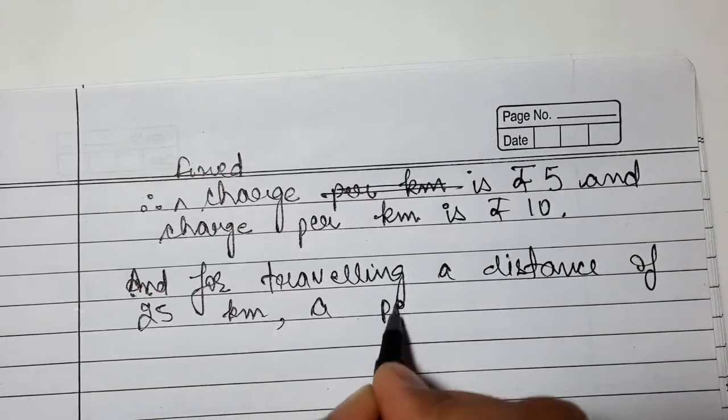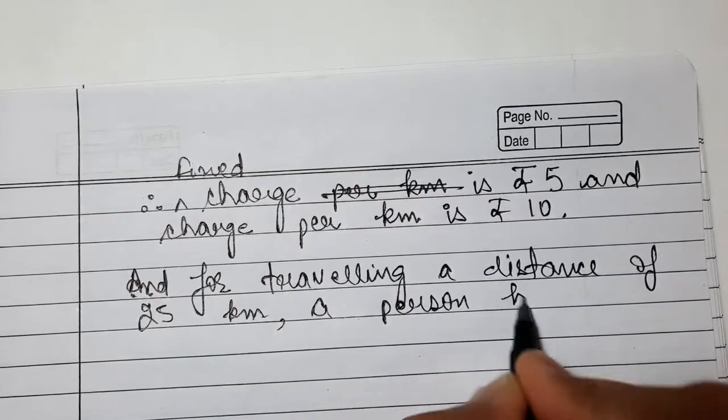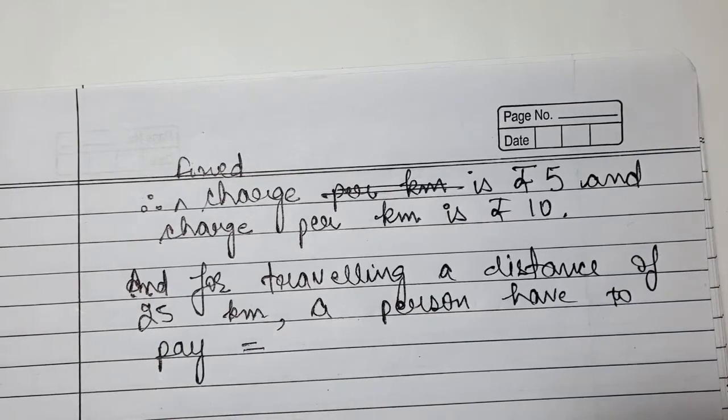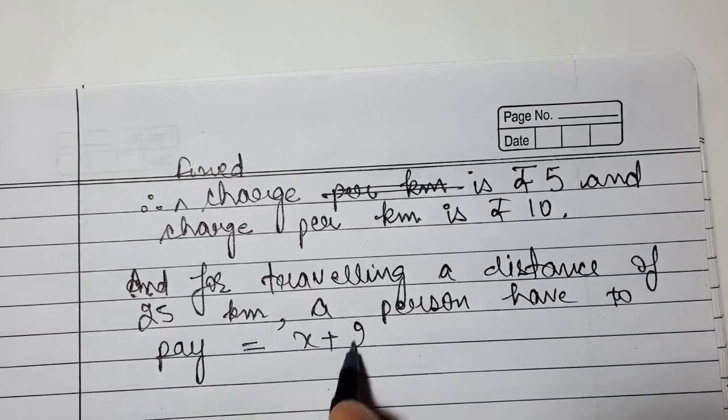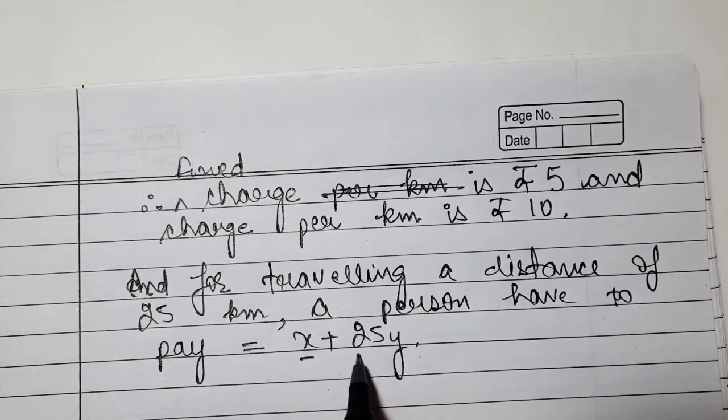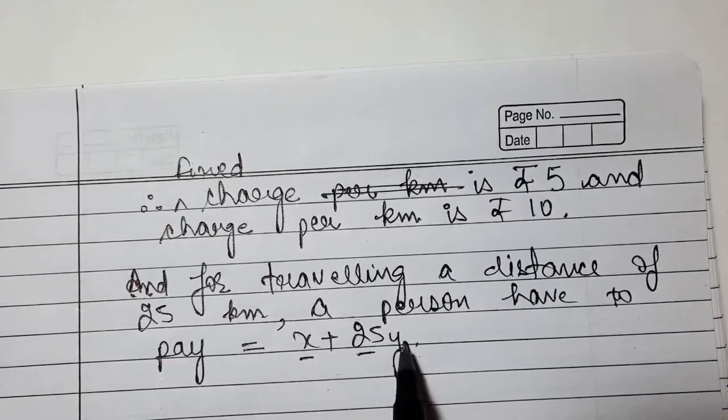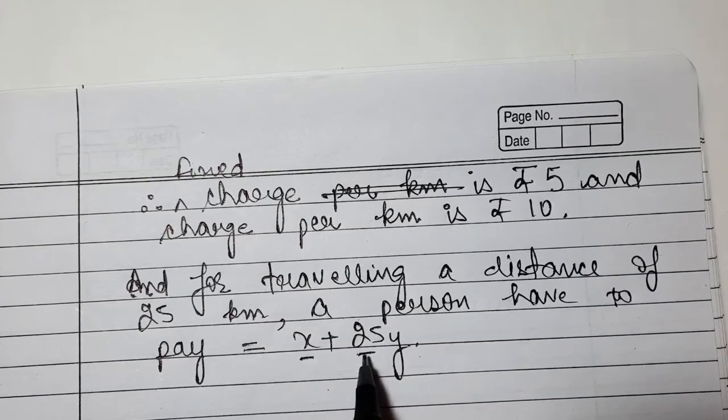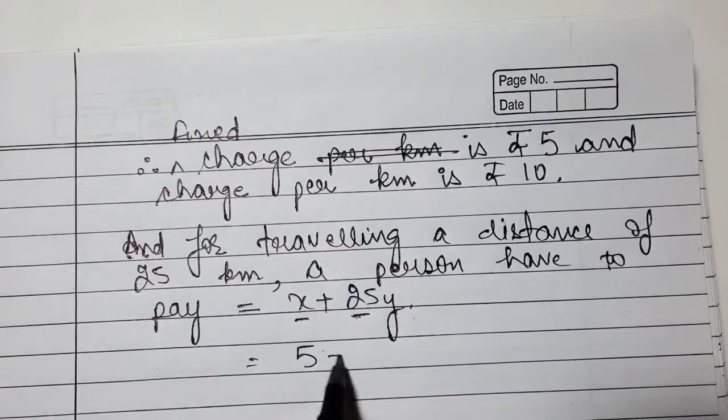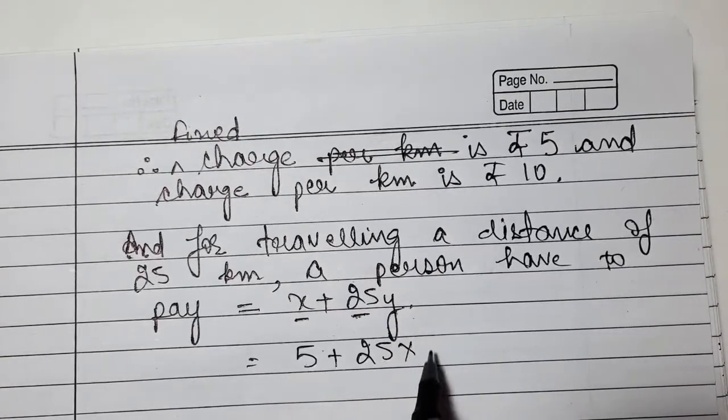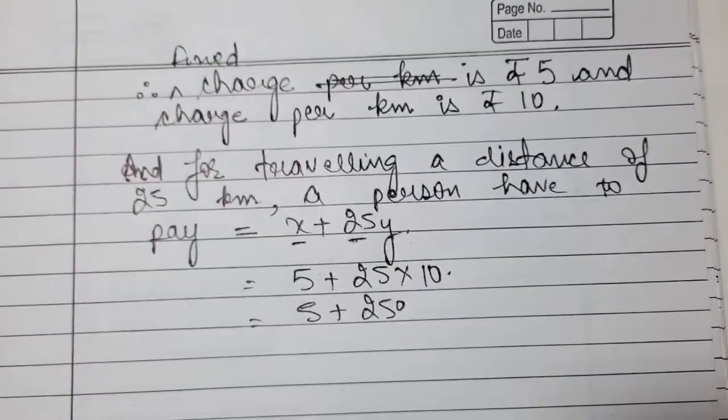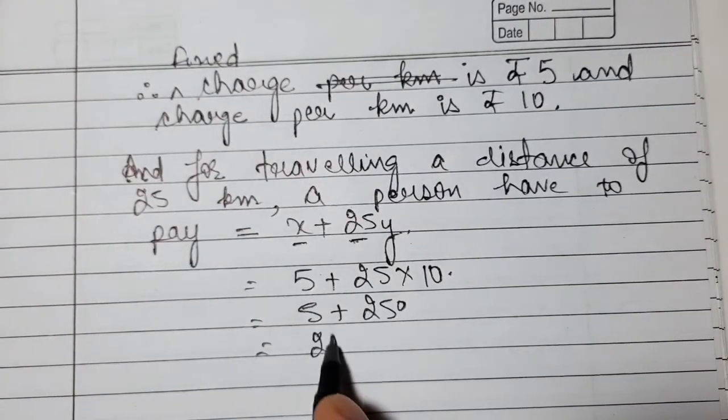For 25 kilometers, a person will have to pay equals x plus 25 times y. That's fixed charges plus charge per kilometer for 25 km distance. For 1 km it's Rs. y, for 25 km it's 25 times y. We found x was 5 and y was 10. So this becomes 5 plus 250, that is 255.